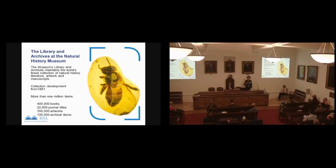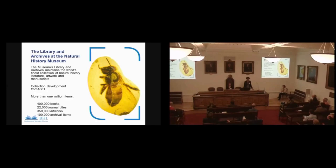Very briefly, the Natural History Museum's Library and Archives Collections maintains the world's finest collections of natural history literature, artwork and manuscripts. There's lots of unique content, things like specimen registers and also field notes, largely in the archives. But there's also a lot of published material as well, books and journals. And it's the published material, the books and journals, that we've mainly been focusing on when it comes to adding content to BHL.